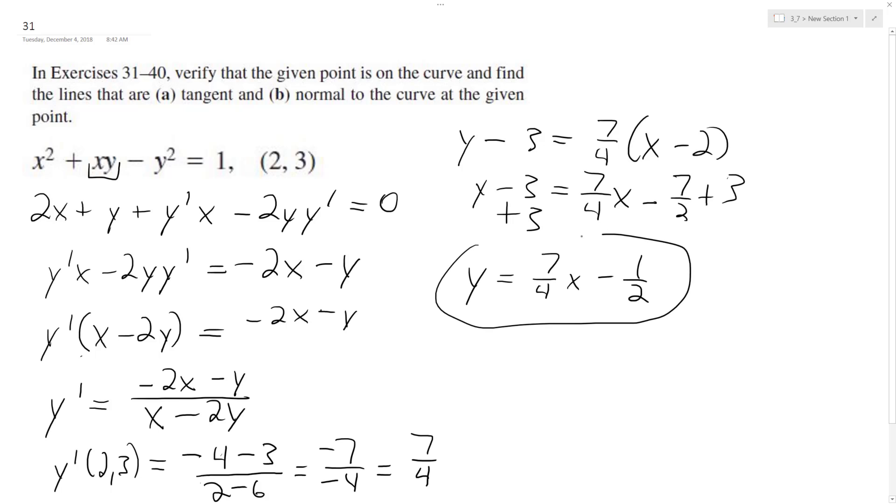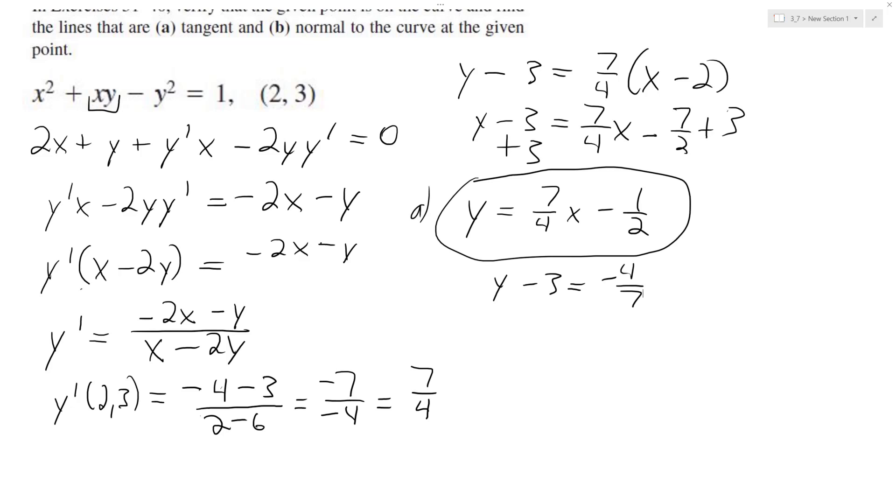Alright, so that's part a and then our normal. Normal is pretty straightforward too, which is the same thing except you just take the negative reciprocal, so it's negative 4 over 7. And we end up with x minus 2.